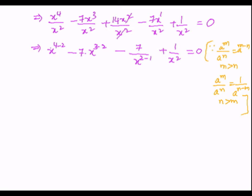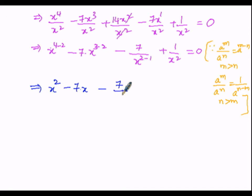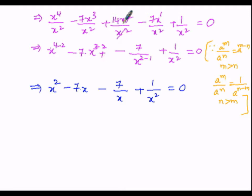The next logical step will be: x to the power of 4 minus 2 is 2, minus 7 into x to the power of 3 minus 2 is 1, minus 7 divided by x to the power of 2 minus 1 is 1 — no need to write the exponent of 1 — plus 1 divided by x square equals 0.